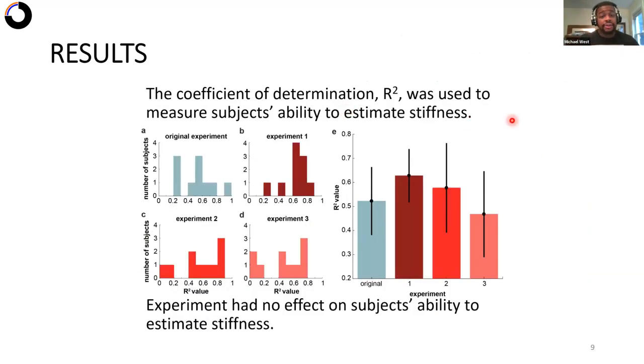And using the coefficient of determination R squared as a measure of subject's ability to estimate stiffness, when we go ahead and look at the distribution of this R squared value across the three new experiments and the original experiment, what we found was experiment had no effect on subject's ability to estimate stiffness. So subjects were able to estimate stiffness statistically equally the same regardless of what manipulation we made to the velocity profile.